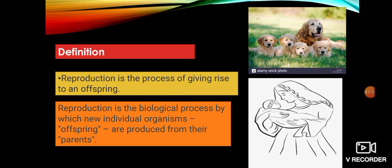So you should be clear with the definition of reproduction — it is the process of giving rise to an offspring. Further, we had learned that it is a process which is very essential for the continuation of the species; without it, that particular species would not be able to survive.